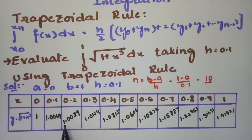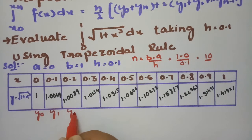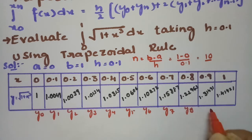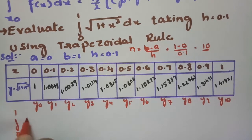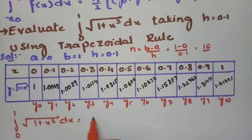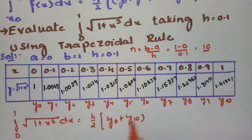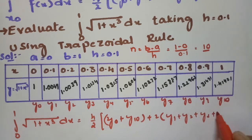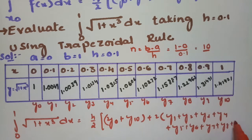After getting all these values, we label them as y0, y1, y2, y3, y4, y5, y6, y7, y8, y9, and y10. According to the trapezoidal rule, the integral from 0 to 1 of √(1+x³) dx equals h/2 times (y0 + y10) plus 2 times (y1 + y2 + y3 + y4 + y5 + y6 + y7 + y8 + y9).